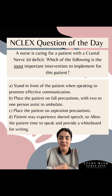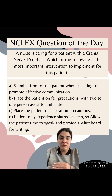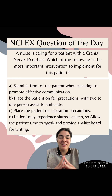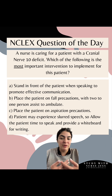Option D: the patient may experience slurred speech, so allow the patient time to speak and provide a whiteboard for writing. The worst thing that happens if I don't do this is that I rush them and won't understand them. So I can eliminate A and D if I don't know the cranial nerve. I cannot stress this enough — just because you've narrowed it down to two doesn't mean one of those is right. However, this is a good way to tackle these questions. If I'm between B and C, it's a 50% chance — pick one, move on, and on the NCLEX, forget about it.